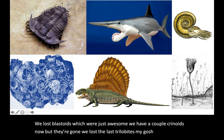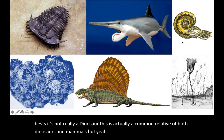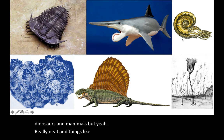Look at what sharks used to look like — look at that guy with a derpy bottom jaw. Crazy, but real. Dimetrodon — one of the best. It's not really a dinosaur; this is actually a common relative of both dinosaurs and mammals. And things like ammonoids — we lost those completely.